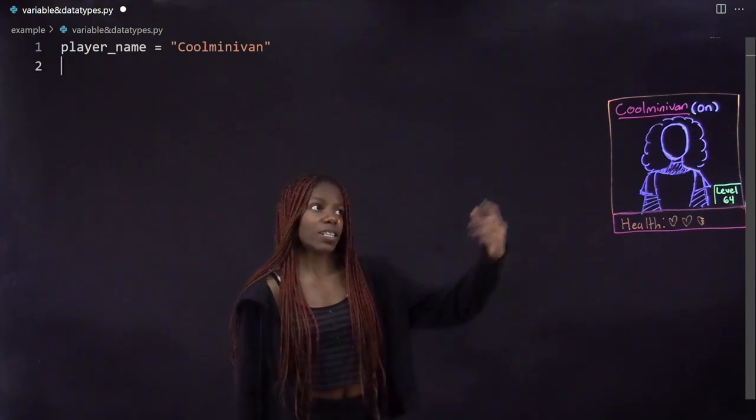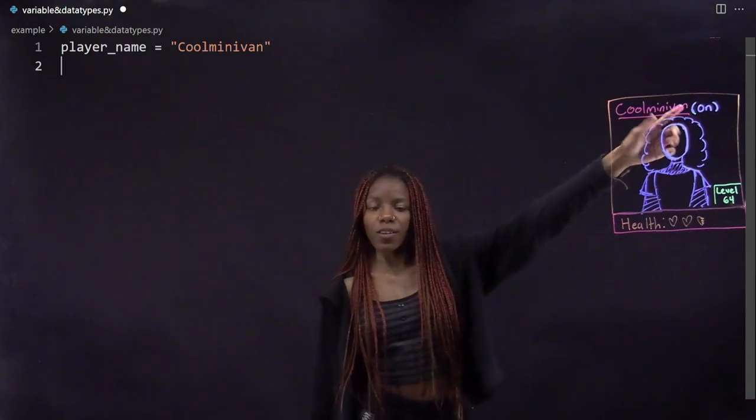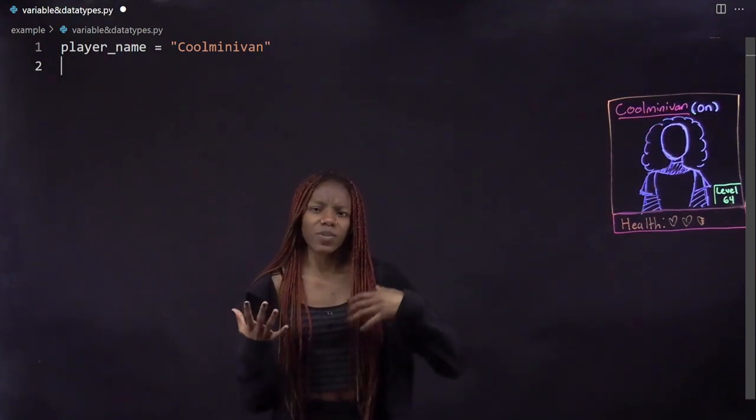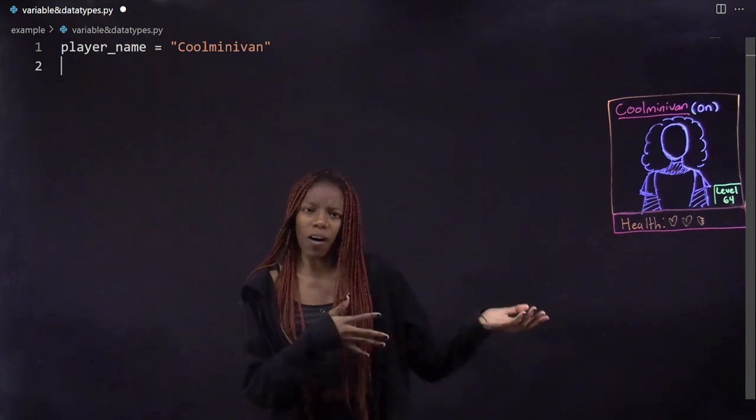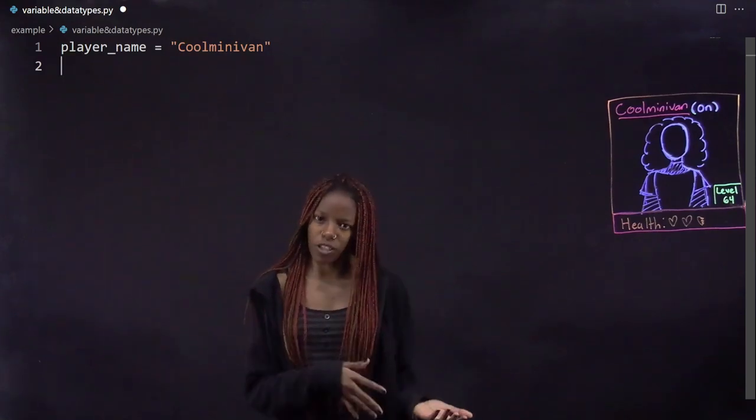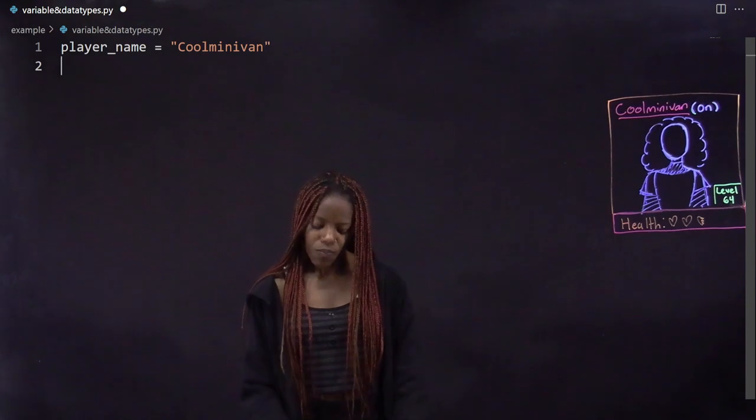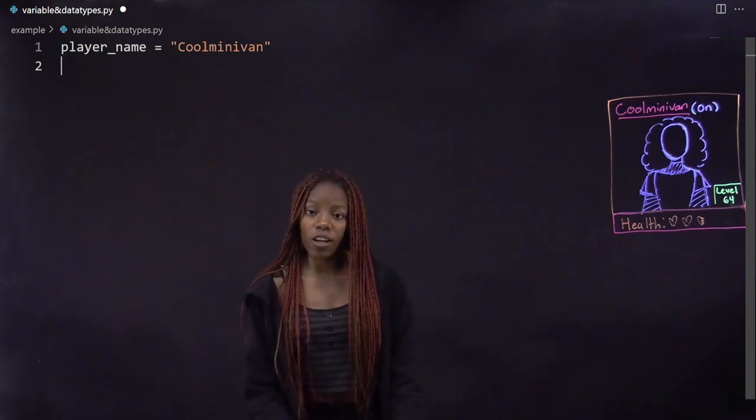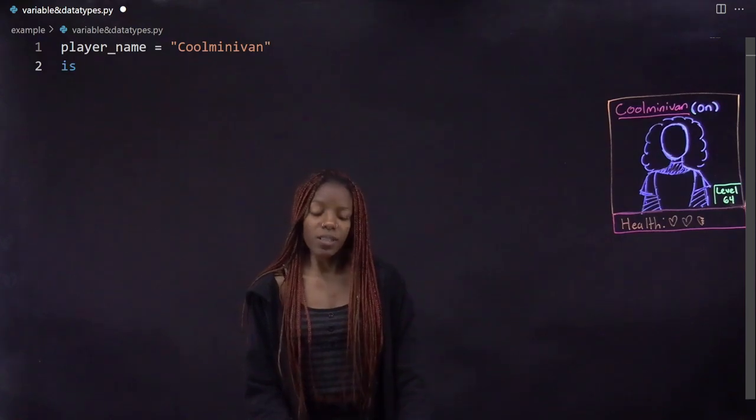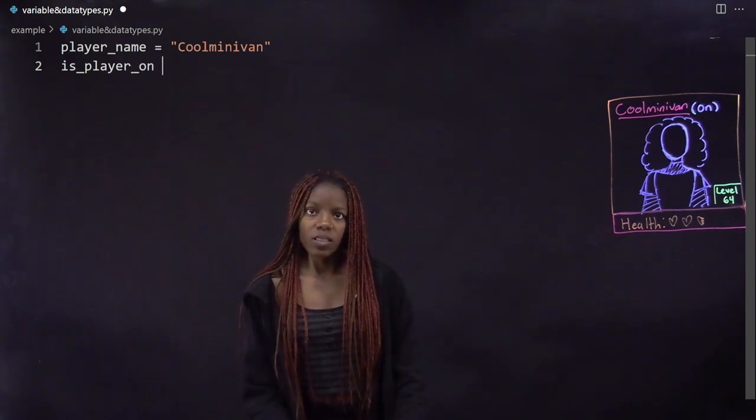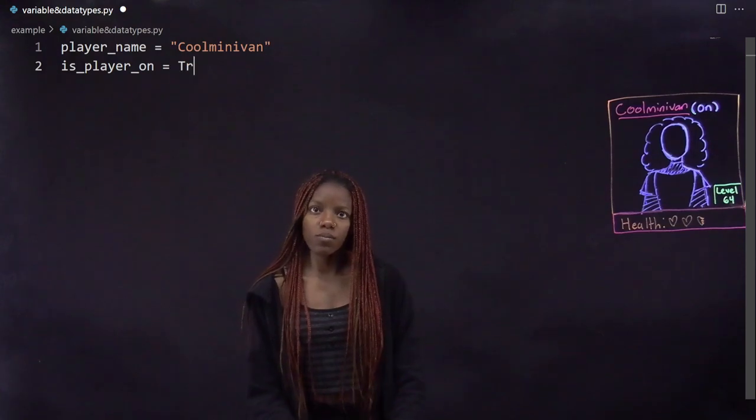The next thing we can note is if the player is on or off. Currently she's on, and instead of doing a string variable and saying 'on,' we can just say is it true she's on or is it false she's on. And to do that, we use a boolean, basically true or false variable. So once again starting a variable, we just name it: is_player_on, and then we do True because she's on.